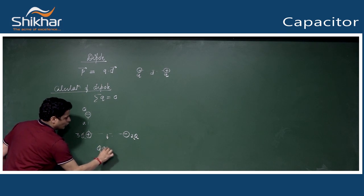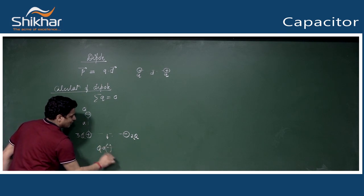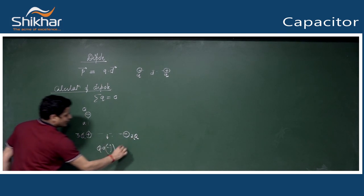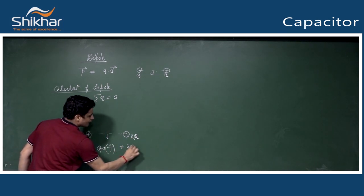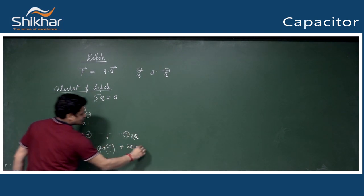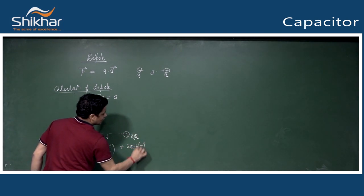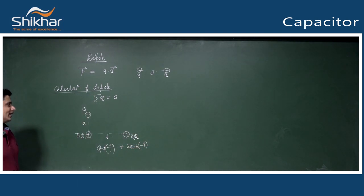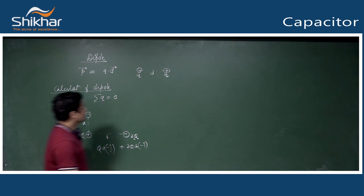The dipole moment components are: q into a in the minus j-cap direction, and 2q into b in the minus i-cap direction. This was the dipole moment calculation.